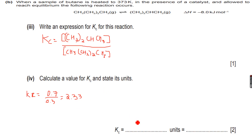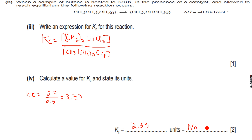So the value of Kc is 2.33. Now regarding units: the unit of the numerator was mol per dm³ and the unit of the denominator was mol per dm³, so the units cancel out. We have no units because mol per dm³ and mol per dm³ cancel out. So it's 2.33 and it has no units.